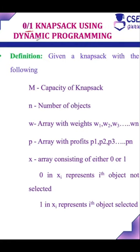What is 0-1 knapsack in dynamic programming? Given a knapsack with the following: M represents the capacity of knapsack, N represents number of objects.